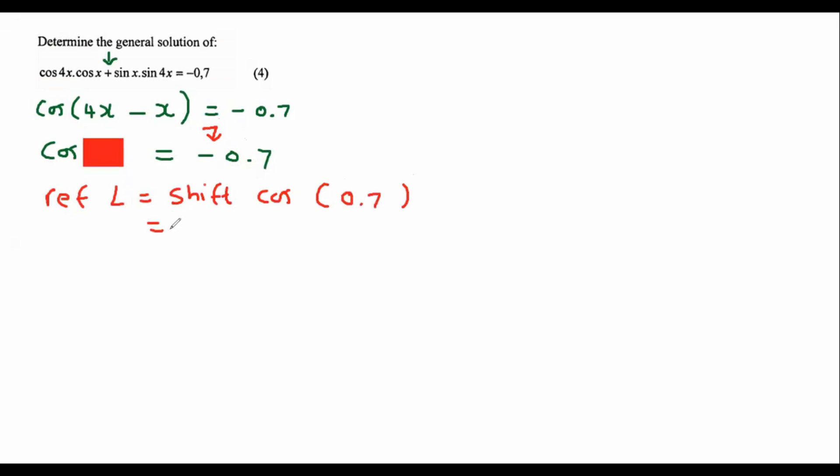If you put that on your calculator, that is going to give you a reference angle which will equal cos shift cos 0.7. And that's going to give us 45.57 degrees. So that is the reference angle.